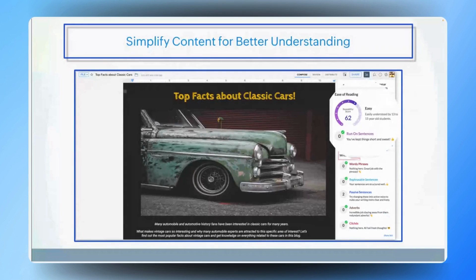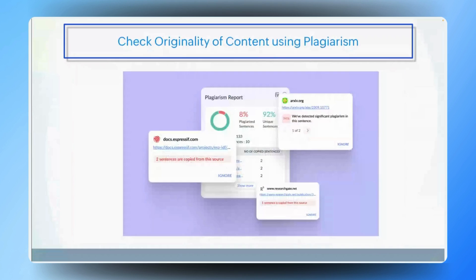Another critical concern for marketing teams is maintaining originality in their content. How does Zoho Writer assist with this, particularly in preventing unintentional plagiarism? It scans your document against a wide range of online sources to ensure your content is unique and hasn't been copied from elsewhere. This feature is especially important for marketing teams as maintaining originality is crucial for brand reputation.